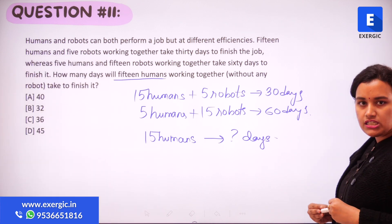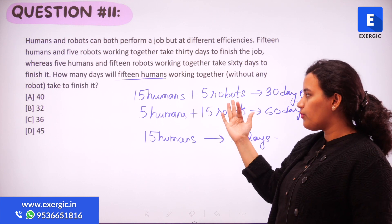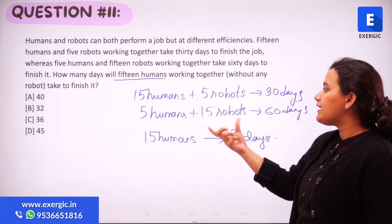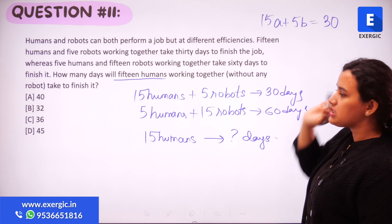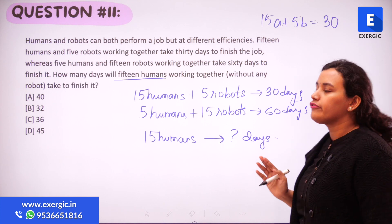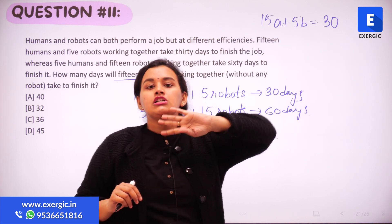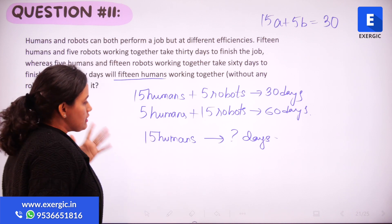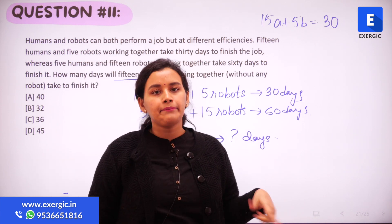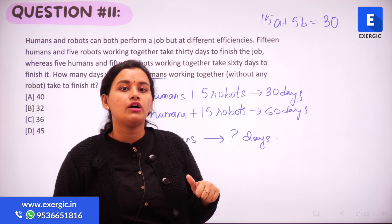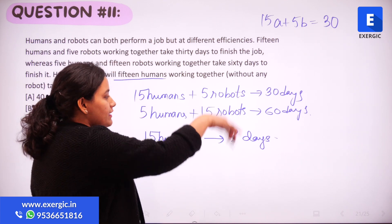What is the approach for these type of questions? As you can see, on the left-hand side of the equation we have humans and robots, and on the right-hand side we have number of days. We cannot just say 15 humans plus 5 robots equals 30 — that won't work, because the units on both sides of the equation must be the same. So what we do is assign per day's work to humans and per day's work to robots, and then find out how much work is being done by all of them together in one day.